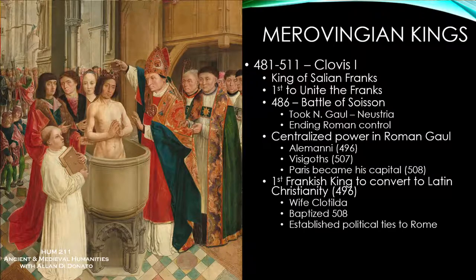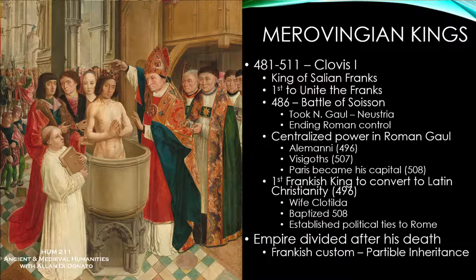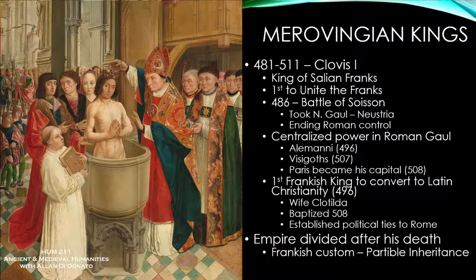At Clovis's death, the empire was divided because the Franks had a tradition called partible inheritance — the idea of passing territory and wealth down to sons and dividing it among children. When it comes to a political situation, this is really the recipe for civil war and all kinds of problems. This would be a long-standing tradition: each son would get a portion, and at the death of those sons, the territory was supposed to pass back to surviving brothers.